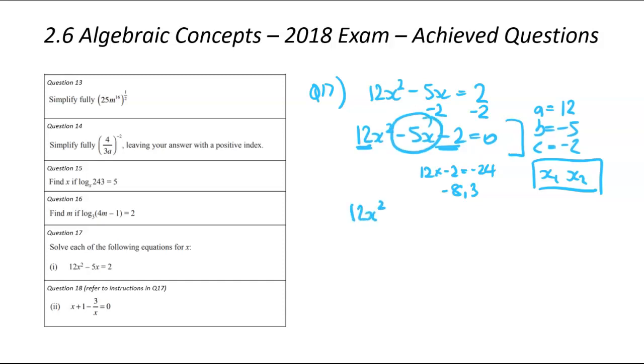And I'm now going to split this bit up here. So 12x squared minus 8x plus 3x minus 2 is equal to 0. And hopefully you can see what I've done there. Minus 8x plus 3x. That's that minus 5x before. So it's the same thing. I've split it up based on those two numbers I identified.